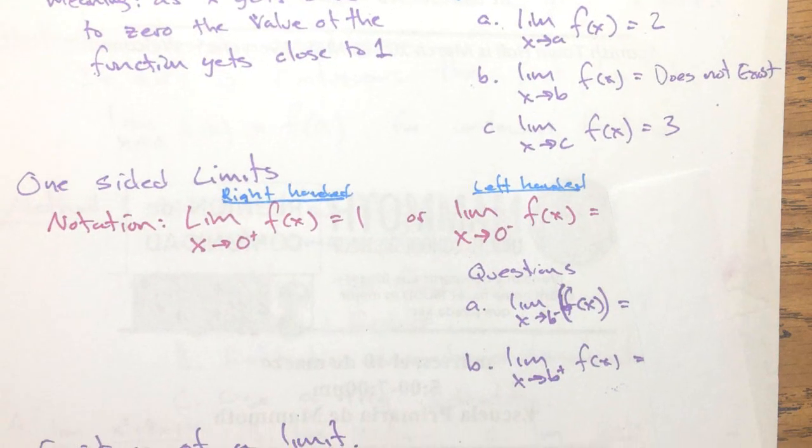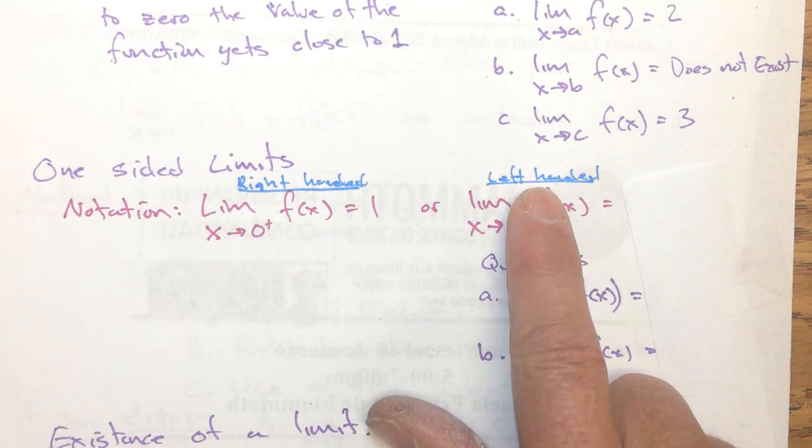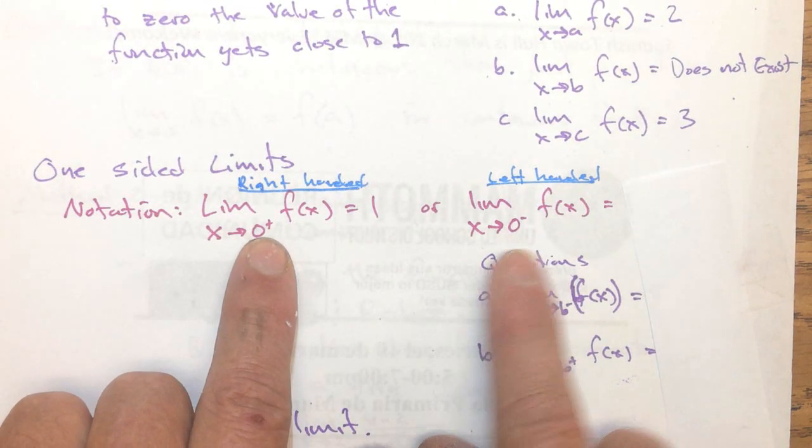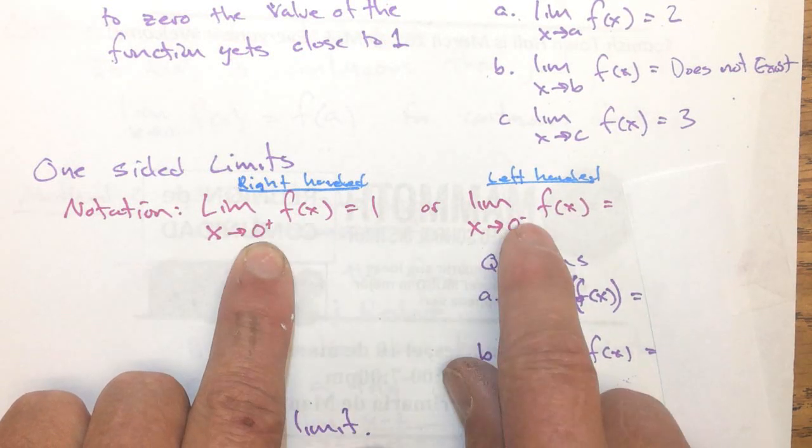And then we did one-sided limits, and that's just using one hand or the other. So we have the right-handed limit and the left-handed limit. Just know what this notation looks like. We put a little plus sign there, a little minus sign to indicate the right-handed and the left-handed limit.